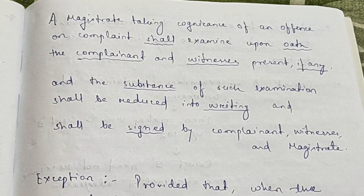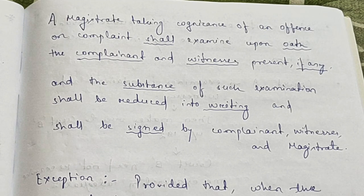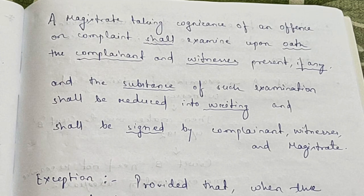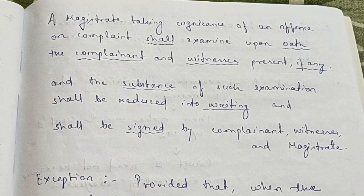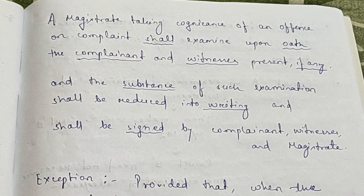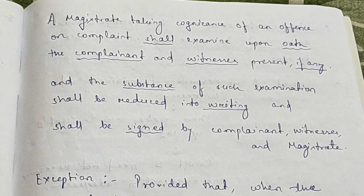Section 200 says: a magistrate who is taking cognizance of an offense upon a complaint shall examine upon oath the complainant and the witnesses present, if any. It shall be mandatory for him to examine the complainant or any witnesses present upon oath, and the substance of such examination shall be reduced into writing and shall be signed by the complainant, witnesses, and also by the magistrate.